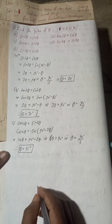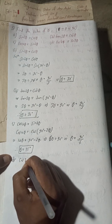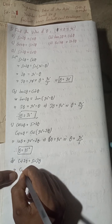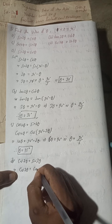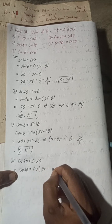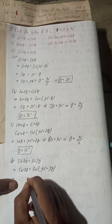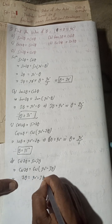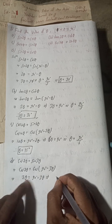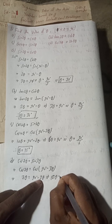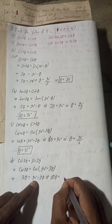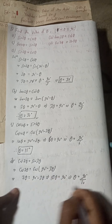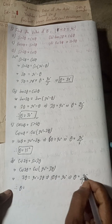Part d: cos 7θ = sin 3θ. Now, sin 3θ can be written as cos(90° − 3θ). So this implies cos 7θ = cos(90° − 3θ). Equating the angles: 7θ = 90° − 3θ. Bringing −3θ to the left gives 7θ + 3θ = 10θ = 90°, therefore θ = 90° ÷ 10 = 9°.